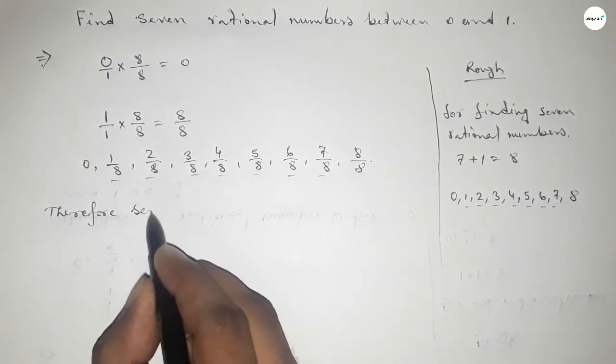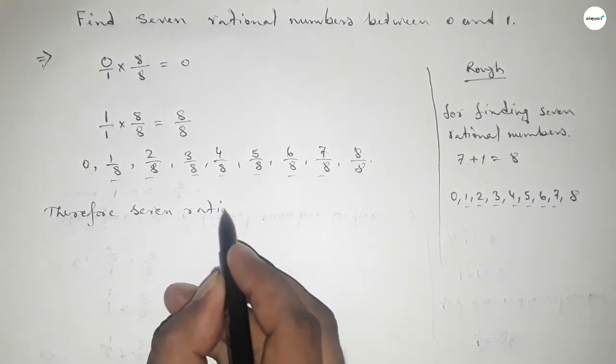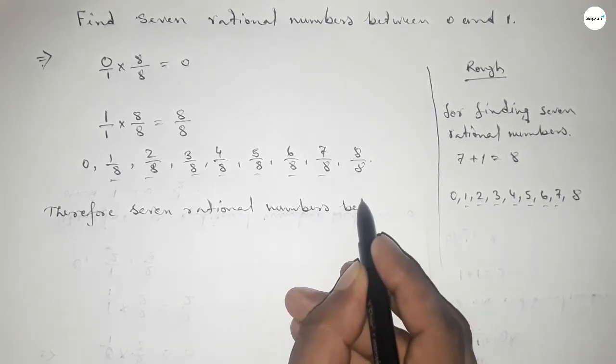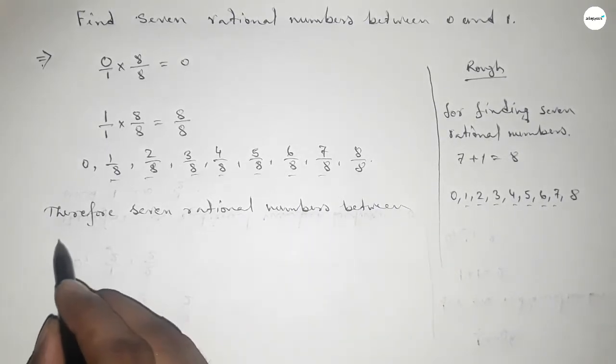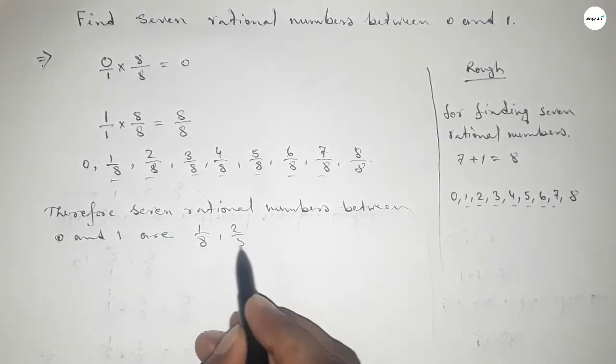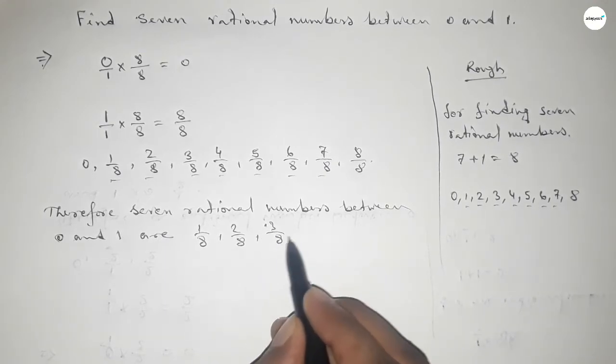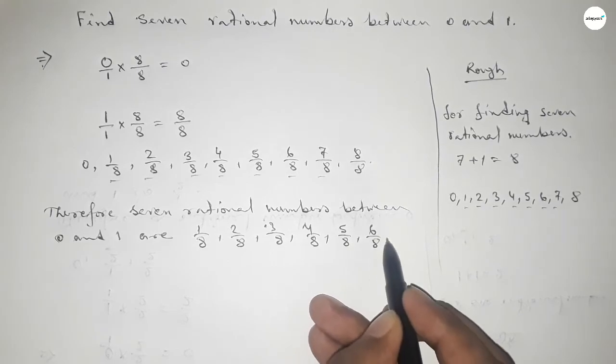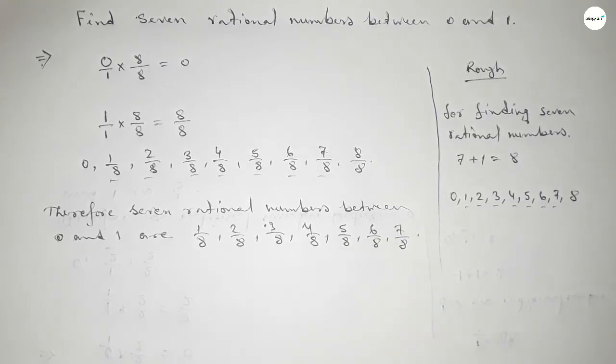Therefore, seven rational numbers between 0 and 1 are: 1 over 8, 2 over 8, 3 over 8, 4 over 8, 5 over 8, 6 over 8, and 7 over 8. So this is the process that we use to find seven rational numbers between 0 and 1.